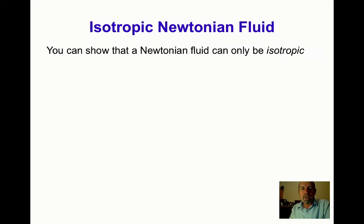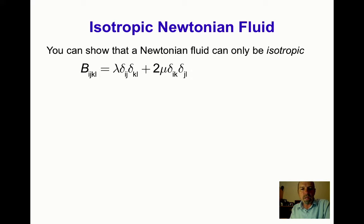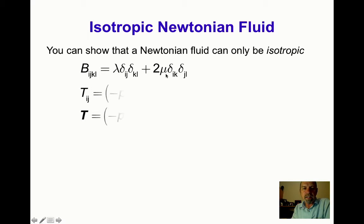We can show that a Newtonian fluid can only be isotropic, which simplifies the fourth-order viscosity tensor down to two parameters, lambda and mu, such that B_ijkl equals lambda delta_ij delta_kl plus 2 mu delta_ik delta_jl.